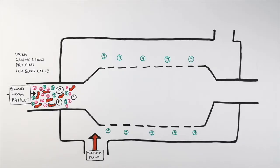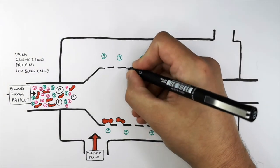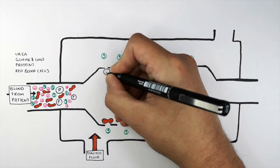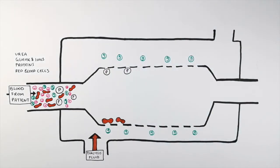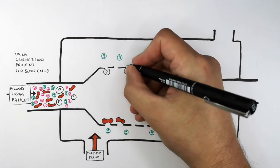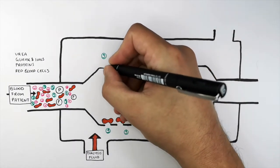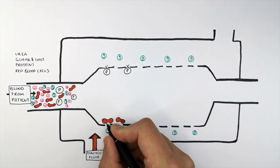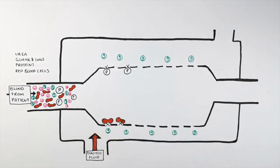Now I'll explain what happens to each component of the blood as it goes through the dialysis machine. The red blood cells don't exit from the blood into the dialysis fluid because they are larger than the pores of the partially permeable membrane. Proteins also remain in the blood and will not exit into the dialysis fluid, because the partially permeable membrane pores are smaller than the size of red blood cells and proteins.